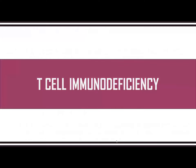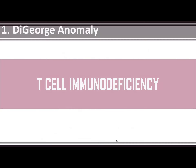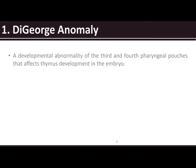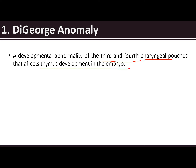Now let's go to T cell immunodeficiency. Under T cell immunodeficiency, we have the so-called DiGeorge anomaly — a developmental abnormality of the third and fourth pharyngeal pouches, affecting thymus development in the embryo. If it's B cell immunodeficiency, it involves the bone marrow; for T cell, it affects the thymus.